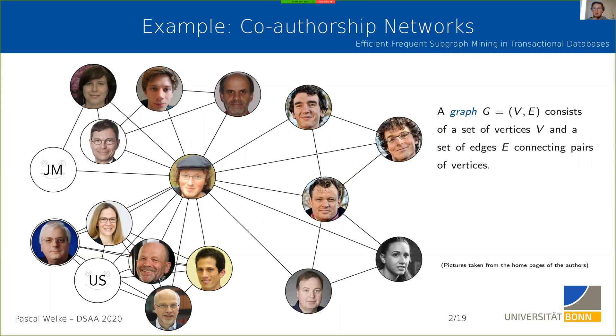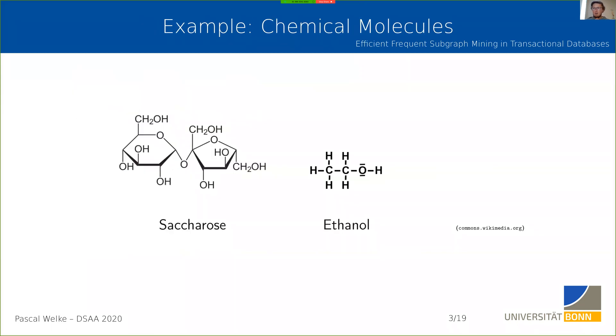Another application that's very important for frequent subgraph mining is chemical molecules, where you have atoms that bond together to form larger molecules. You can describe these molecules as graphs. There are lots of other ways of having data that's easily described in forms of graphs, but not necessarily easy in other notions like traditional tabular data.